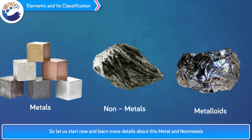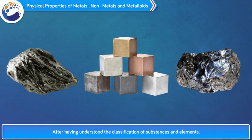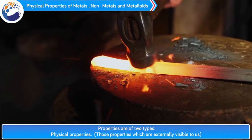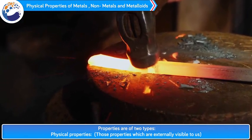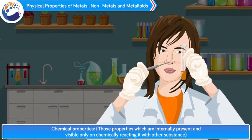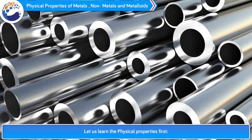So let us start now and learn more details about metals and non-metals. Physical properties of metals, non-metals and metalloids. After having understood the classification of substances and elements, let us now explore these elements in detail and study their properties. Properties are of two types: physical properties — those properties which are externally visible to us — and chemical properties — those properties which are internally present and visible only on chemically reacting with other substances.